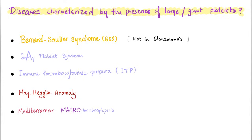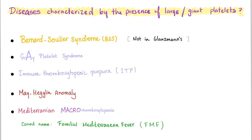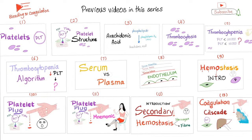We also have Mayheglin anomaly and Mediterranean macrothrombocytopenia. Other diseases common in the Mediterranean area include Mediterranean sea fever, G6PD deficiency, and beta thalassemia.